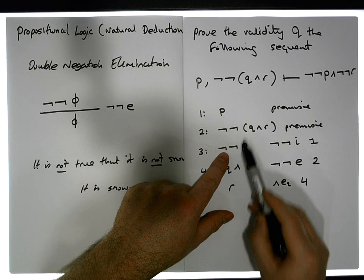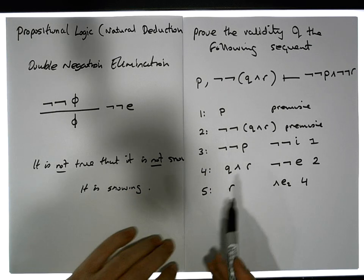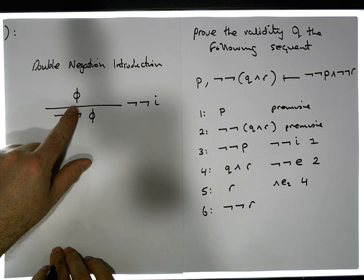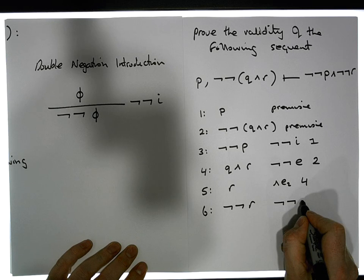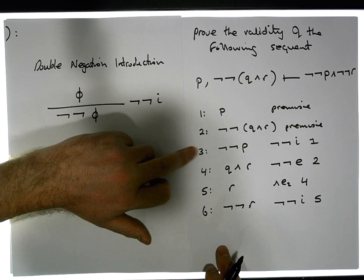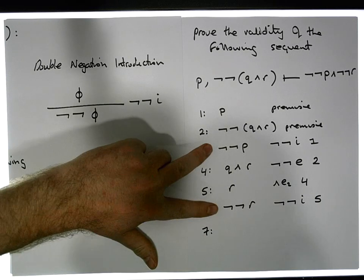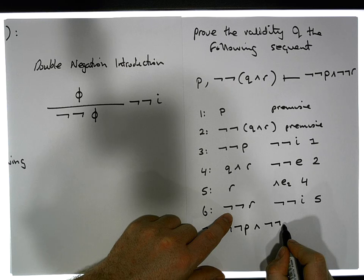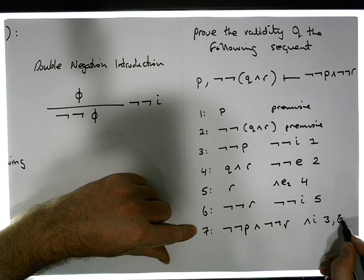We have ¬¬p as a consequent deduced from our premises, and we have r, but we need a double negation of r. So step six: we introduce ¬¬r — if phi is true then its double negation is true — using double negation introduction from line five. Now in line three we have the left operand and in line six the right operand, so in step seven we do AND introduction to get ¬¬p ∧ ¬¬r, using lines three and six.